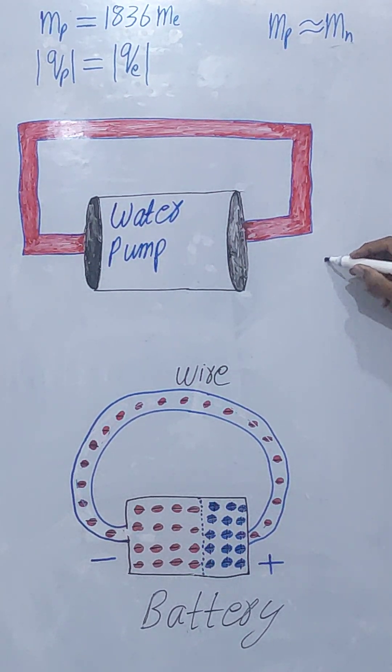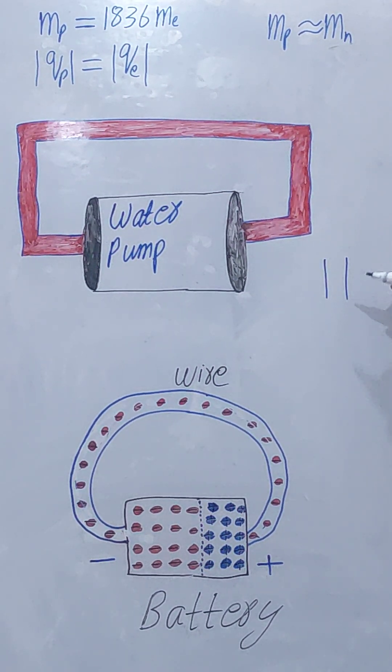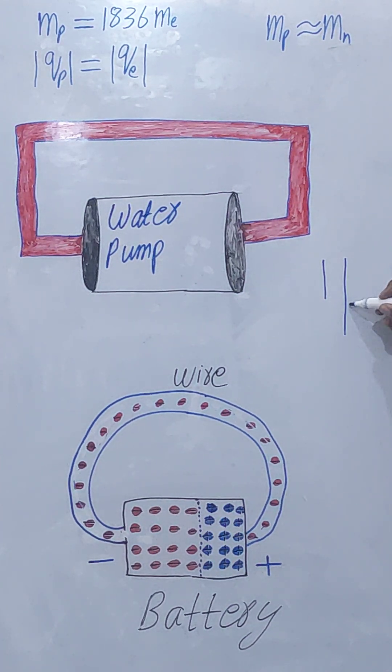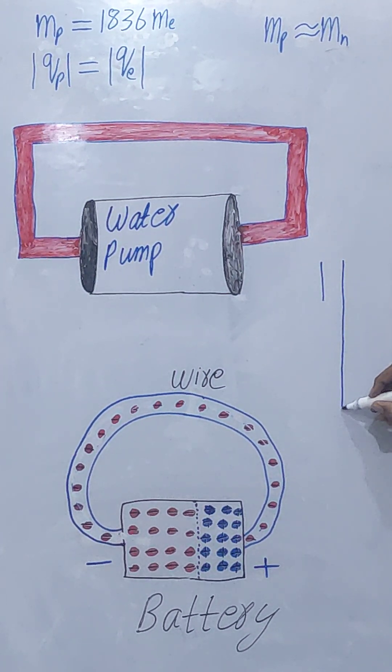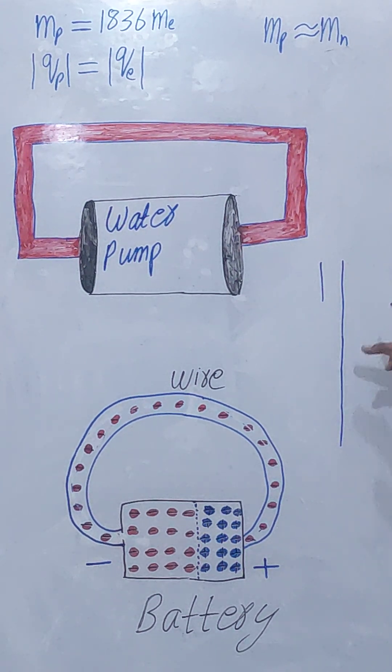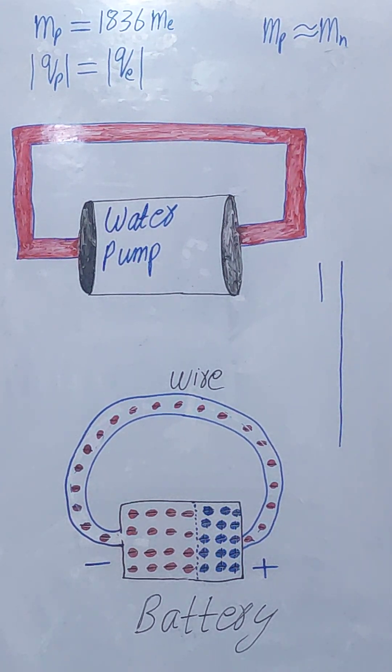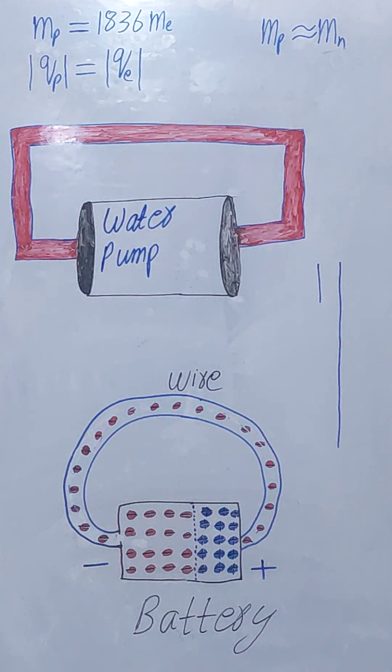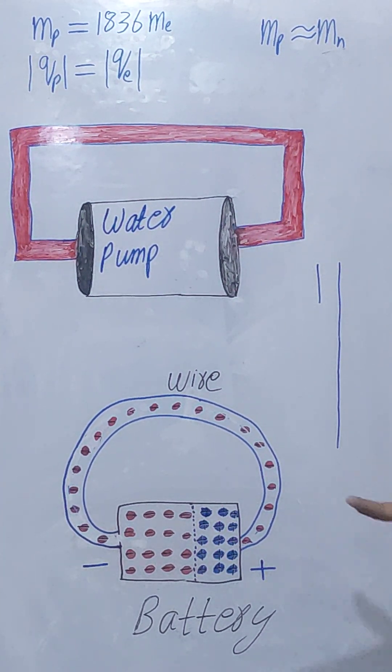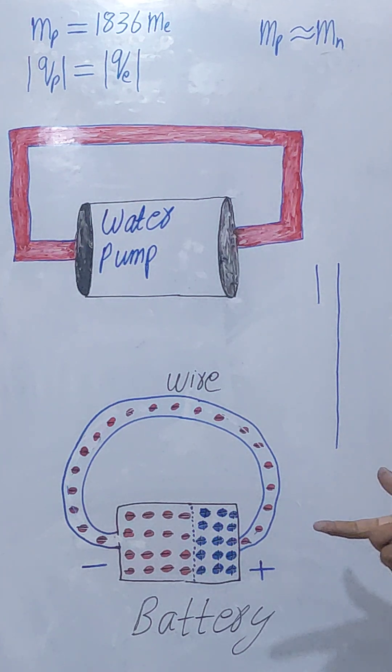For example, this line is 2 times of this line. Now 3 times, 4 times, 5 times. It is 5 times of this one. What will be 1836 times? 1836 times. It is too much bigger.